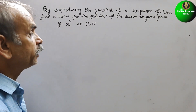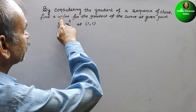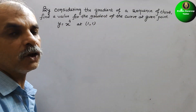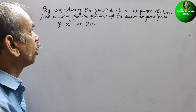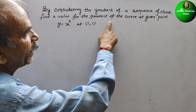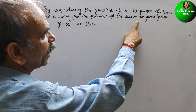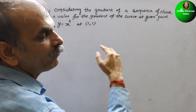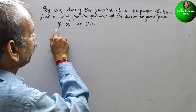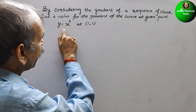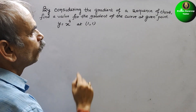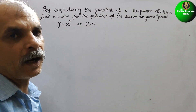Your question is: by considering the gradient of a sequence of chords, find a value for the gradient of the curve at the given point. Here they have given y is equal to x to the power of 4 at the point (1, 1).